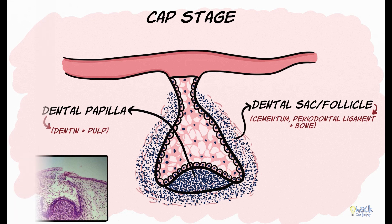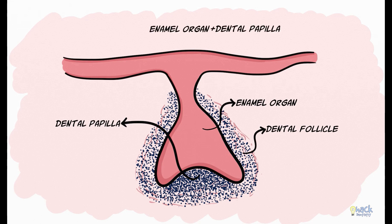Together, the enamel organ, the dental papilla, and the dental follicle constitute the tooth germ or the dental organ.